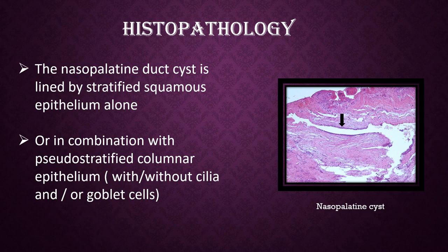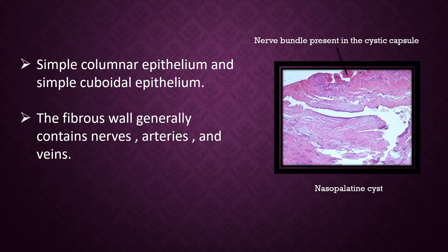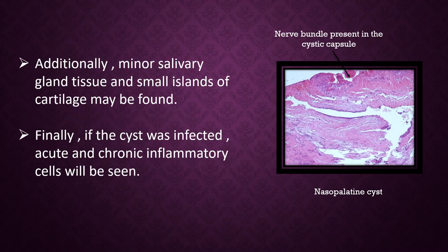Histopathology: the nasopalatine duct cyst is lined by stratified squamous epithelium alone or in combination with pseudostratified columnar epithelium, with or without cilia and/or goblet cells. Simple columnar epithelium and simple cuboidal epithelium may also be seen. The fibrous wall generally contains nerves, arteries, and veins. Additionally, minor salivary gland tissue and small islands of cartilage may be found.